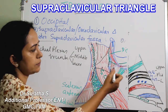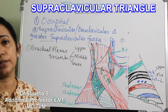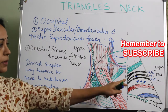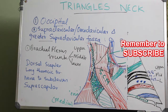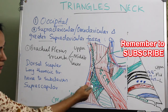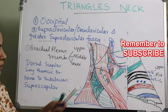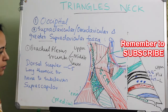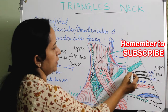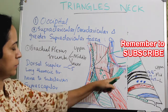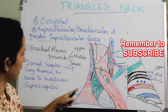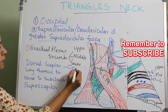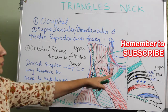The branches of the brachial plexus given off in the supraclavicular triangle include the dorsal scapular nerve, which was already explained in relation to the occipital triangle. It arises from the C5 nerve root, passes through scalenus medius, and supplies the levator scapulae muscle.